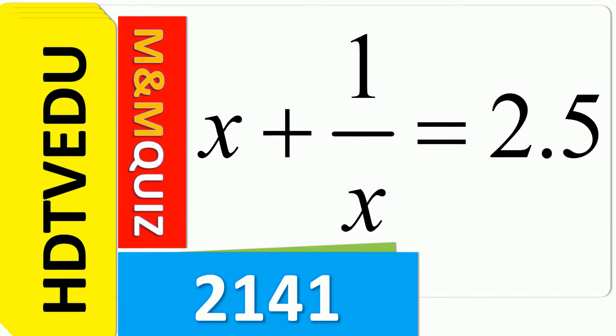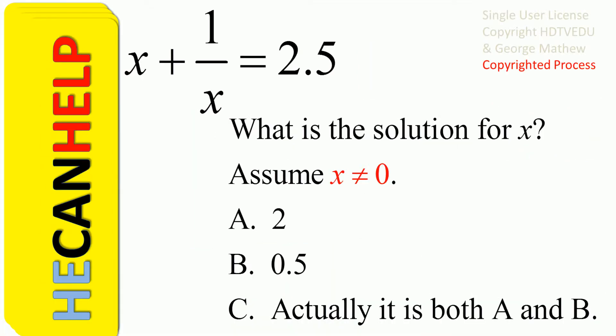x plus 1 over x equals 2.5. M&M quiz 2141. Welcome. What is the solution for x? Assume x is not equal to 0. Is it a, is it b, or is it actually both a and b?